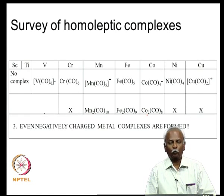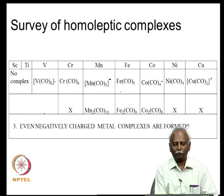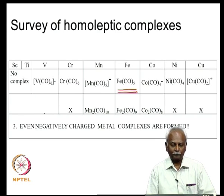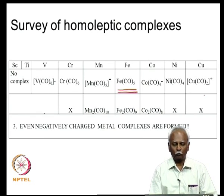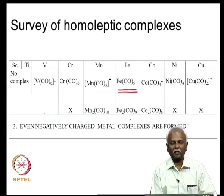Interestingly, iron is one species in the whole series that forms a dimer, yet there is a way of making the neutral complex with the right number of carbon monoxides. Even considering complexes from vanadium to copper that are mononuclear or charged, the dimeric species are mostly in the neutral state. They can also be generated by reacting them with a good electron source like sodium amalgam or potassium amalgam, injecting electrons into these dimeric species to generate negatively charged systems.